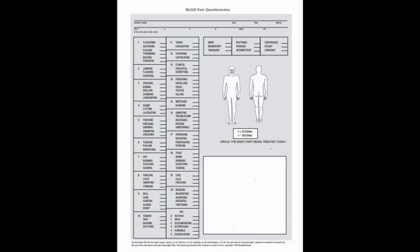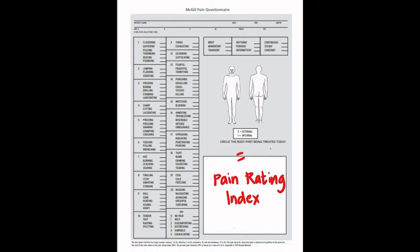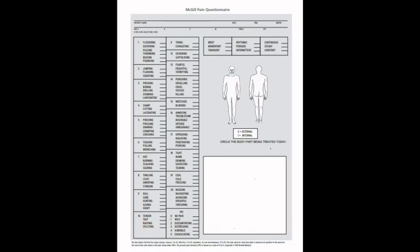Each subcategory receives a numeric score equal to the rank order of the highest descriptor chosen. The domains and miscellaneous items are summed to determine the pain rating index, and another set of 16 descriptors is provided to identify the present pain index.